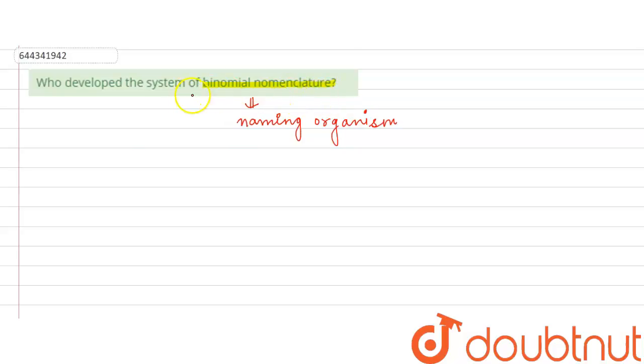Binomial nomenclature. Nomenclature simply means to name something, and if we talk about the term binomial here, we can say that bi means it is composed of two words.